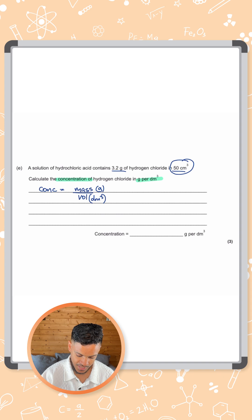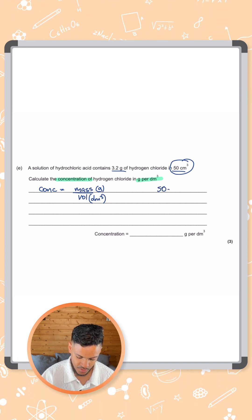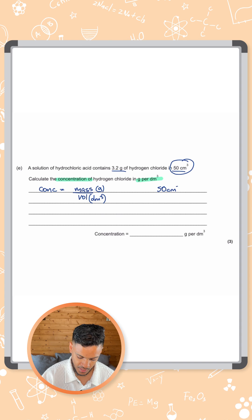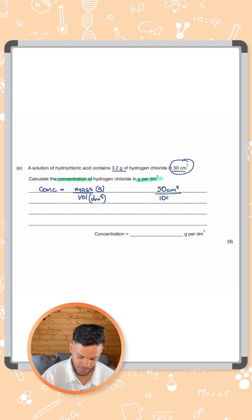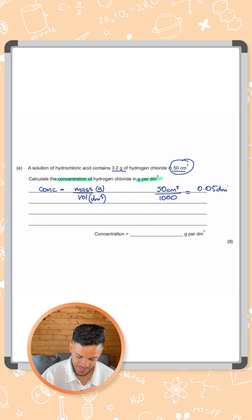The first thing we need to do is convert the 50 centimeters cubed into dm cubed. To do that, you divide it by 1000. That gives you 0.05 dm cubed.